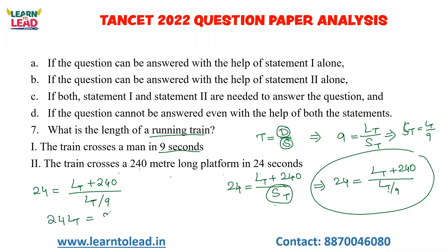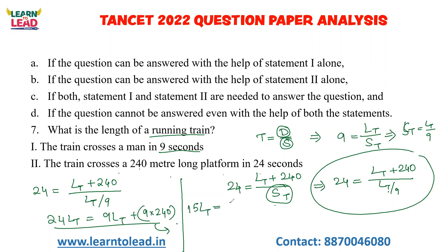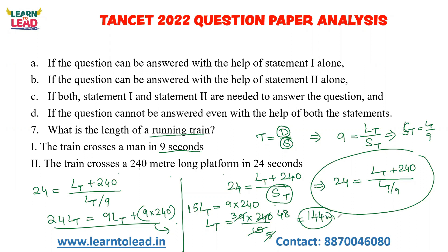Substituting: 24 times length of train equals 9 times length of train plus 9 times 240. Solving: 15 times length of train equals 9 times 240. Therefore, length of train equals (9 × 240) / 15 = 144 meters. So by combining both statements, I can find the length of the train. The answer requires both statements together, so option C.